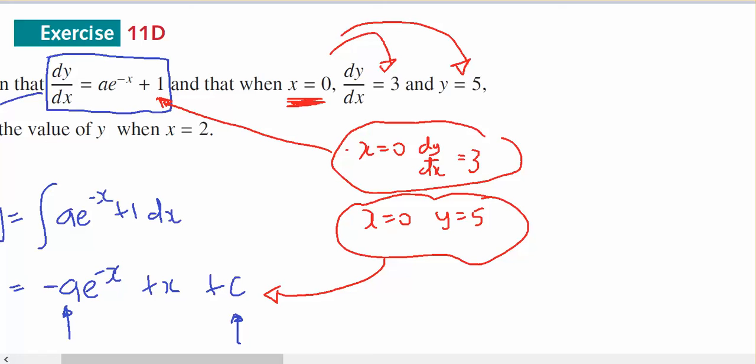So looking at this one, then 3 equals, x equals 0, a e to the 0 plus 1. 3 equals a plus 1. A equals 2.